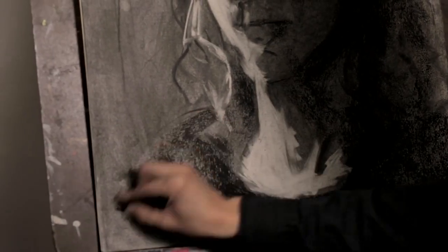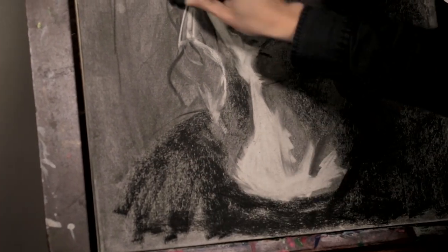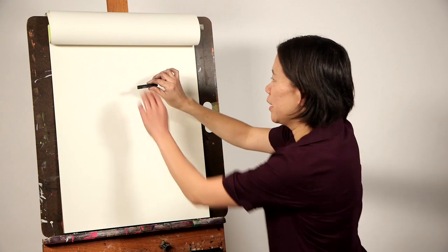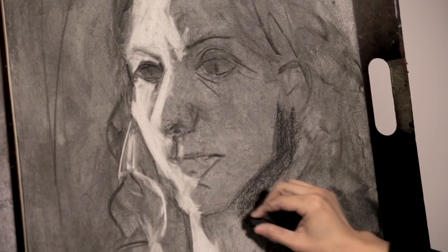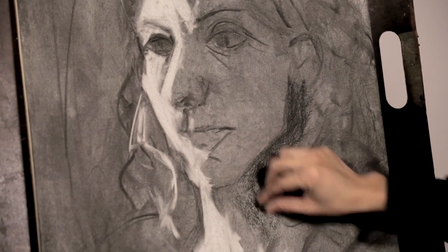Compressed charcoal is a powerful tool for creating deep, beefy blacks. It comes in long sticks like this, but you want to take it and break it into a piece that's about one inch long. This allows it to become much more versatile when you draw.